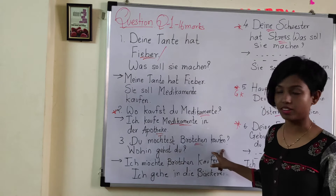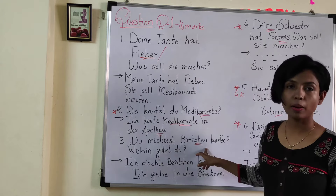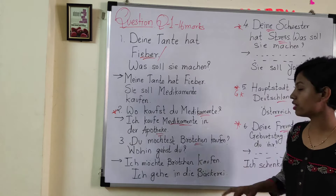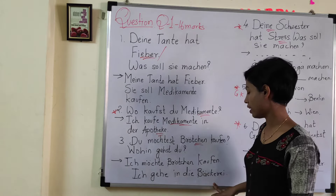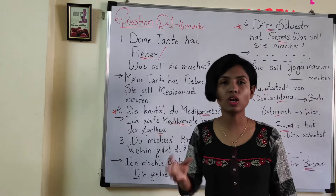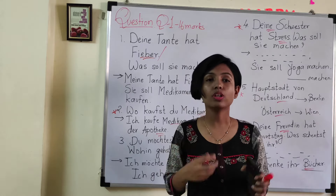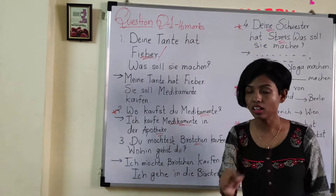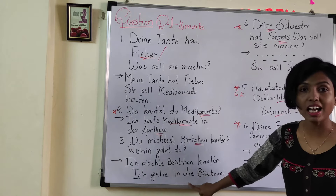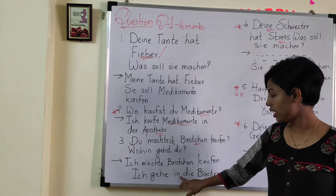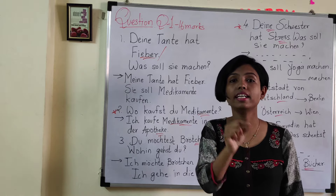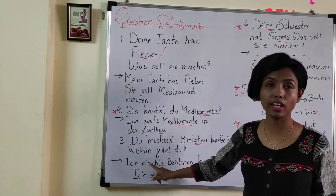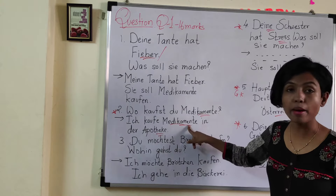The third question: Ich möchte Brötchen kaufen — you want to buy a bun. One line from the question gives you an answer with marks — don't exclude it. Ich gehe in die Bäckerei. If you don't know where bread or bakery items are sold, write Supermarkt. Spelling: S-U-P-E-R-M-A-R-K-T. Note: here it is 'in dem Supermarkt' when the question is Wo, but when the question is Wohin — where to — it is also 'in den Supermarkt' with accusative.